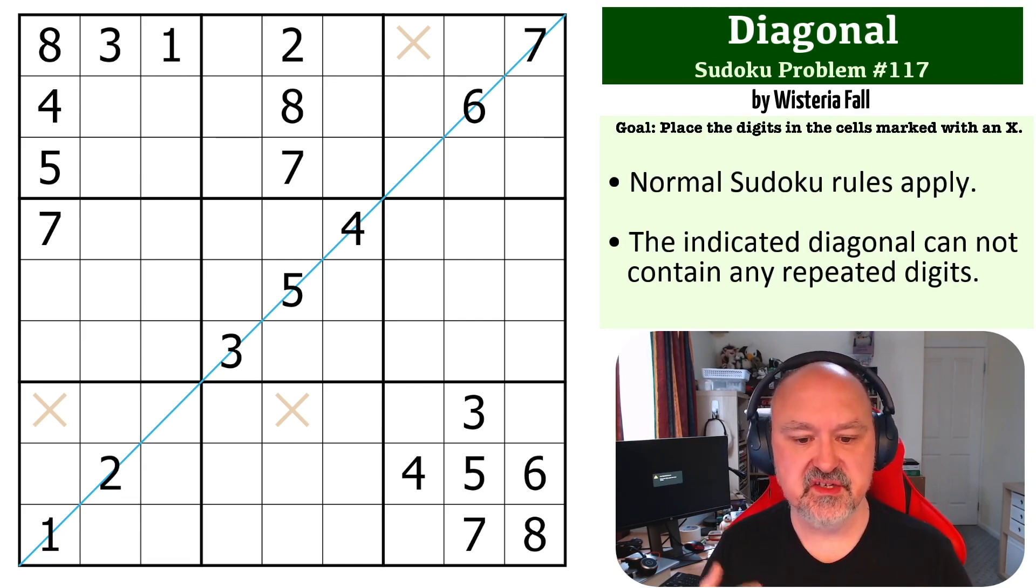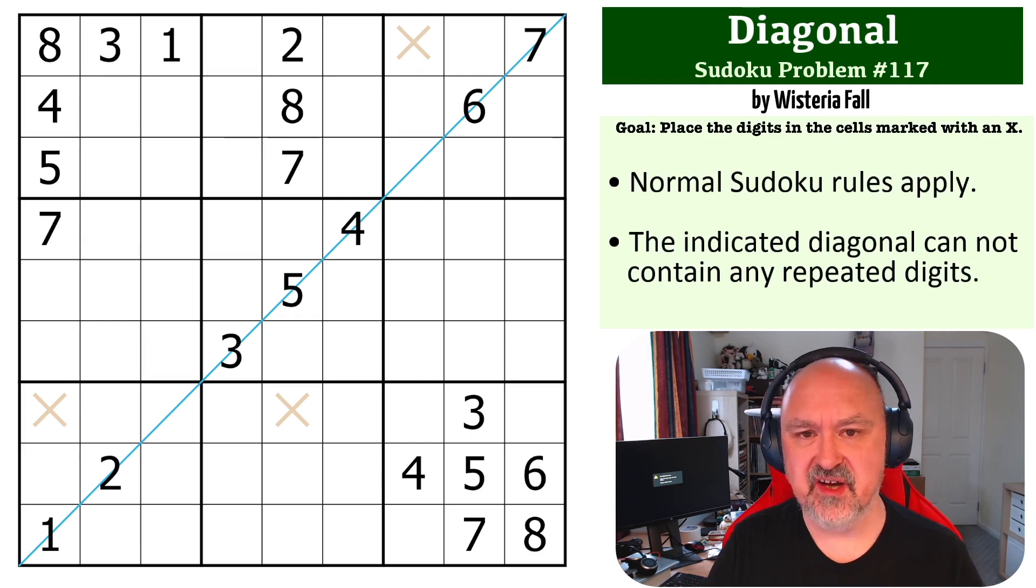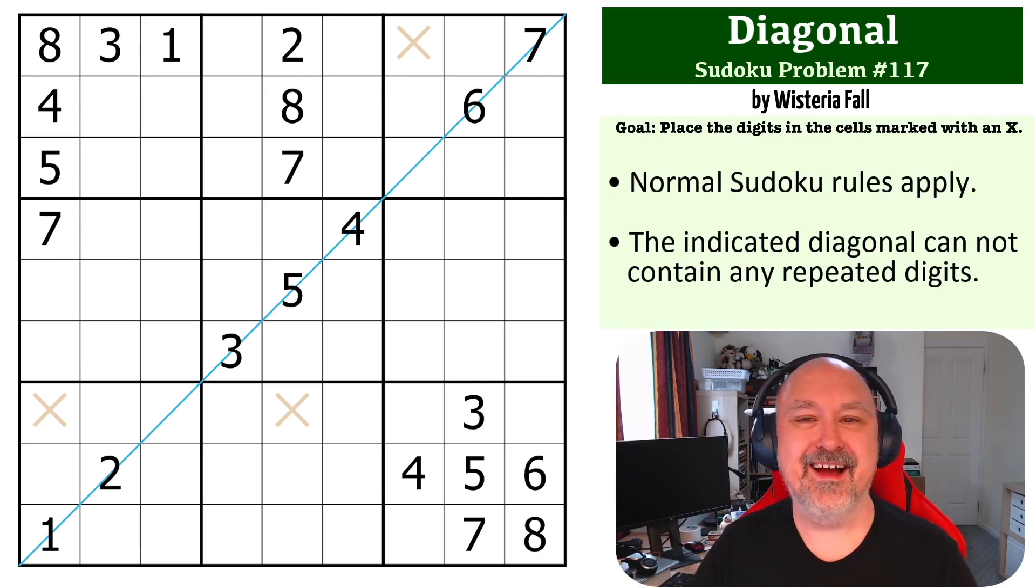So the way this works is you must place the digits in the cells marked with an X. That's all that's needed to solve this one, and along the indicated diagonals, you cannot have any repeated digits. And with that, the digits in the cells marked with an X are solvable. So there's a link below to where you can find a copy of this grid, and I'm going to wait for a few seconds so you can attempt this one for yourself. And then when you unpause the video, I will be back to explain how this one works.